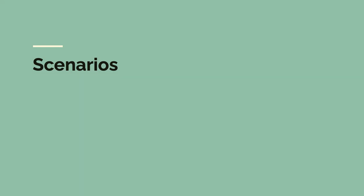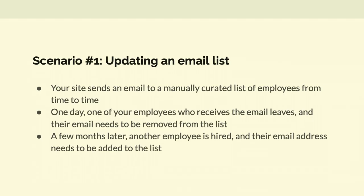I want to talk about a couple of scenarios that we face. I've adapted these a little bit to make them more general — I'm sure some of you have faced some of them. The first scenario is you need to update an email list. Your website sends emails to a manually curated list of employees from time to time. One day, as employees do, an employee leaves, they retire, they get a better job, they win the lottery. You need to remove them from the email list. And then a few months later, their replacement is hired and you need to update the email list yet again.